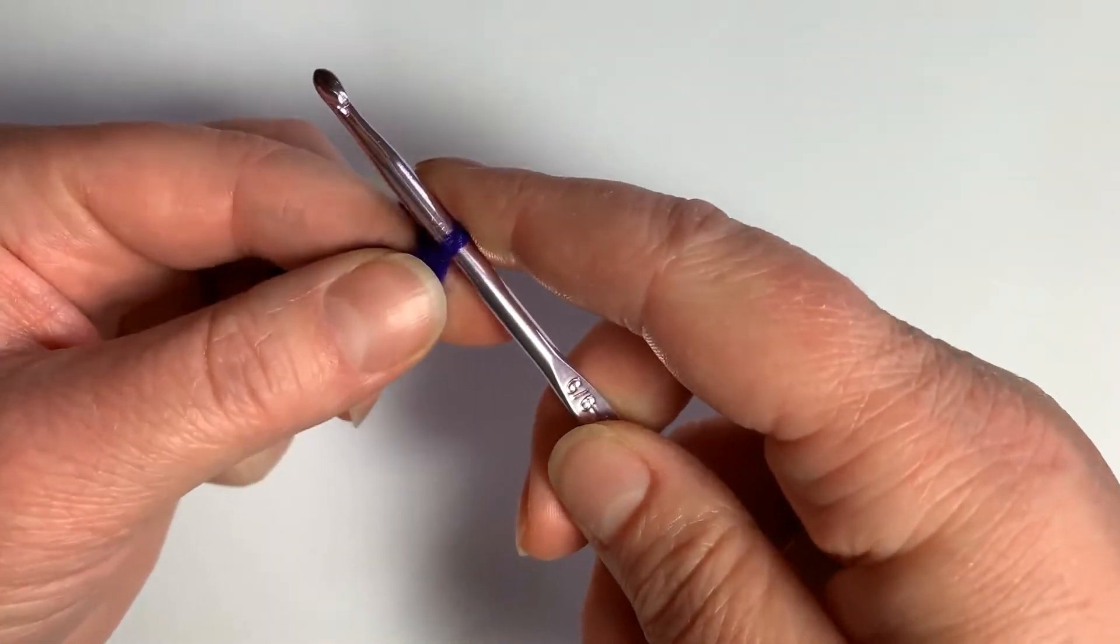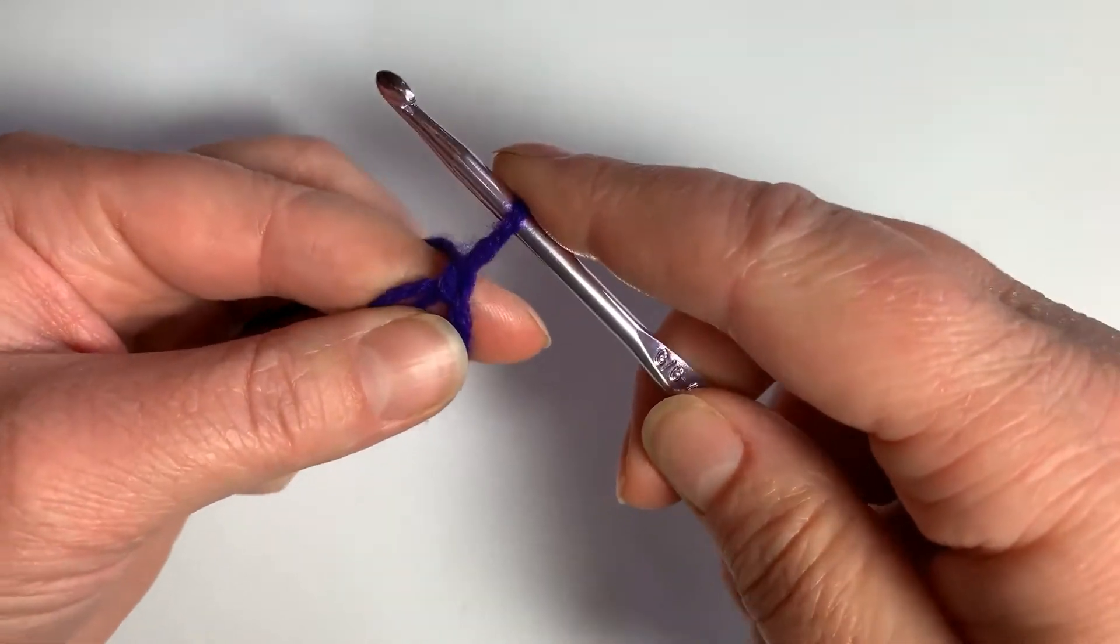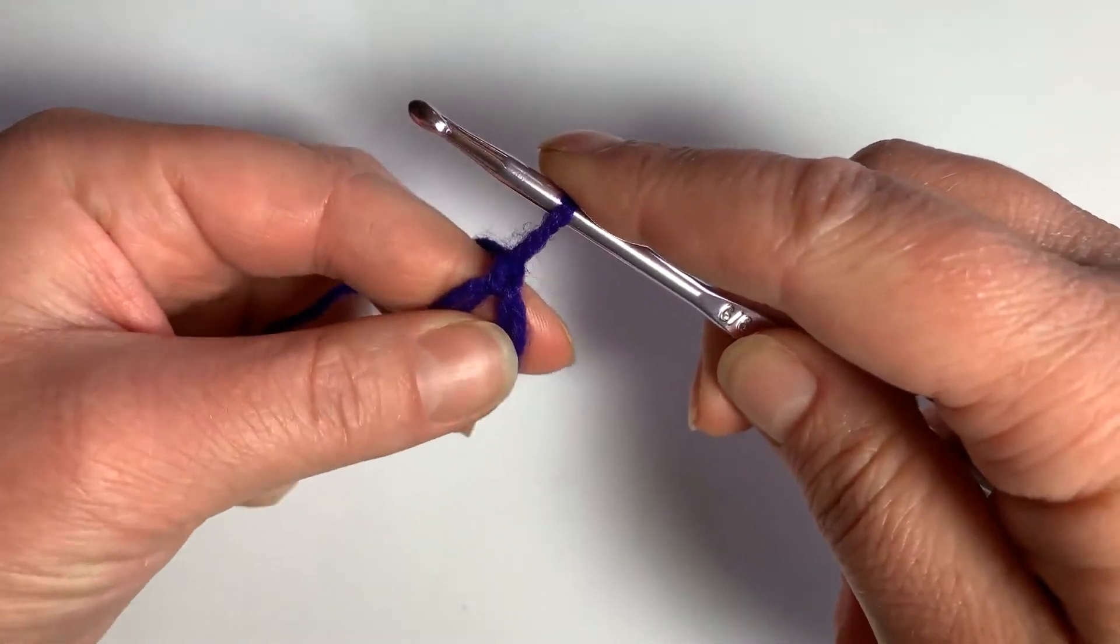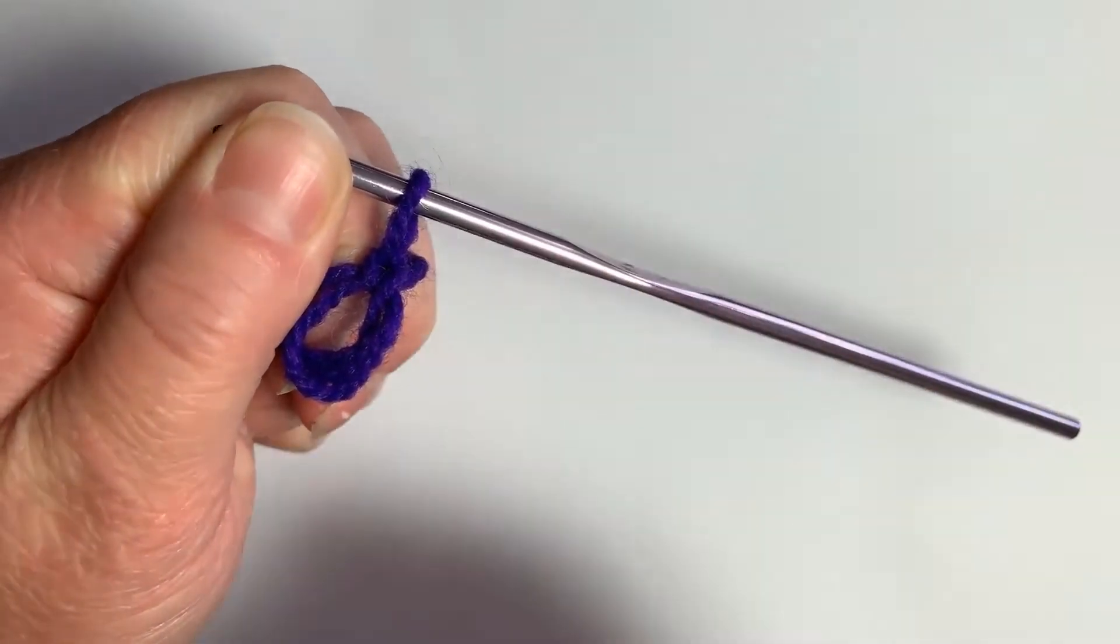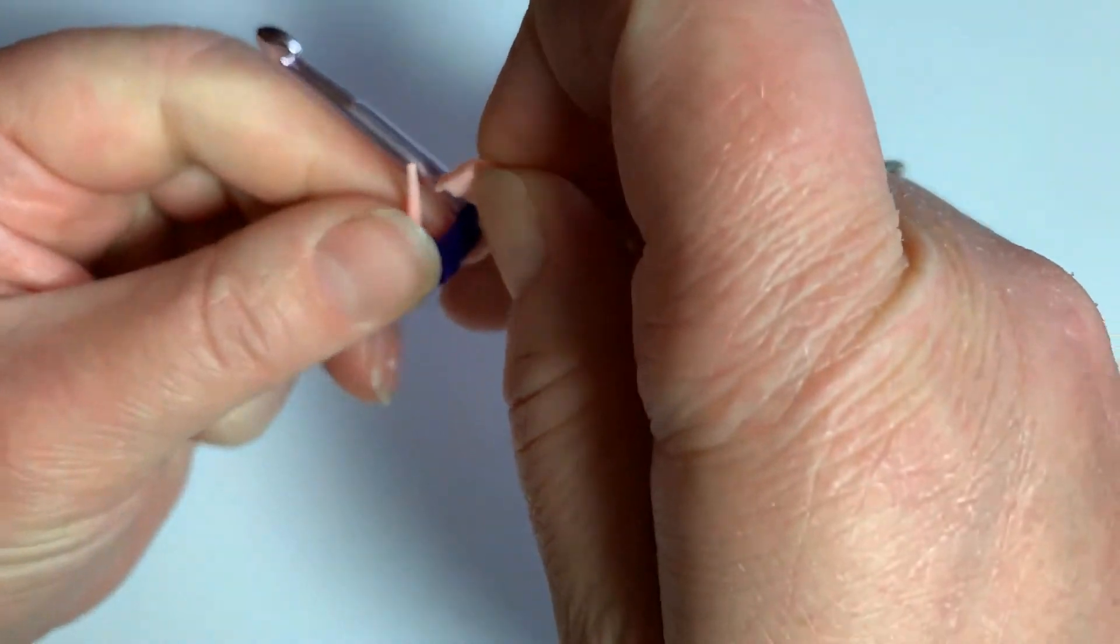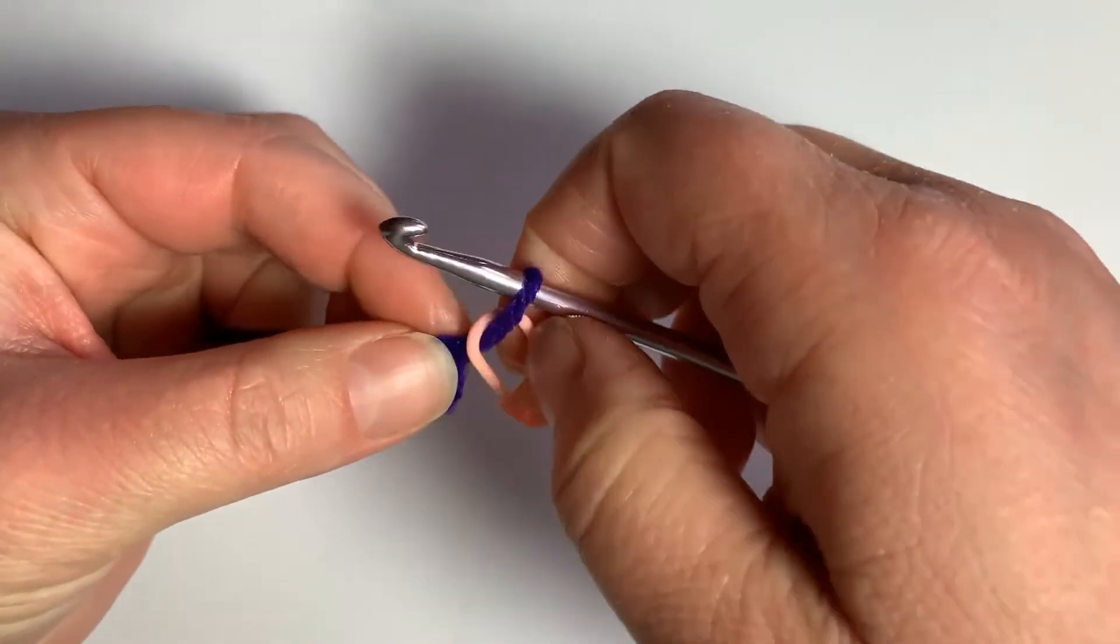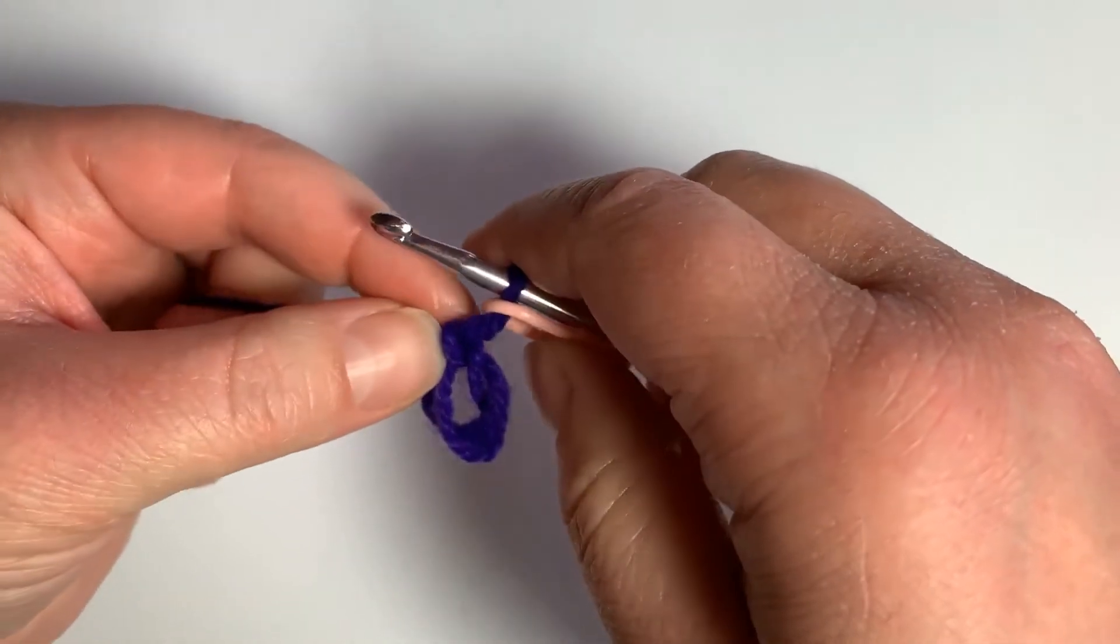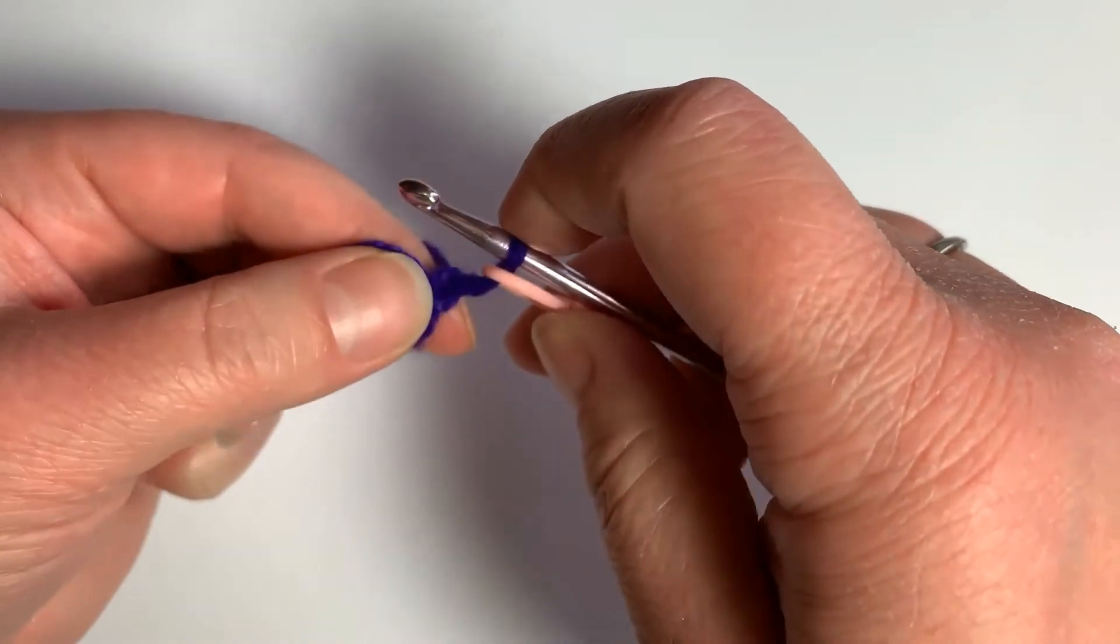Now we're going to do an invisible starting half double crochet. So you pull up your yarn, your loop, about the height of a half double crochet. And then you take a stitch marker and you put it around that loop, up towards your hook. And then you will hold on to the loop with your forefinger.